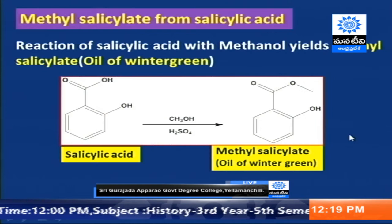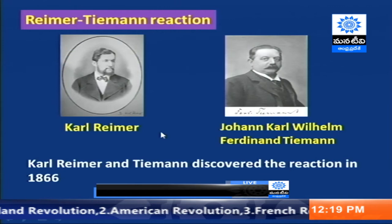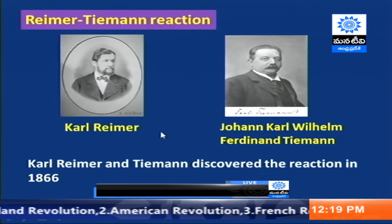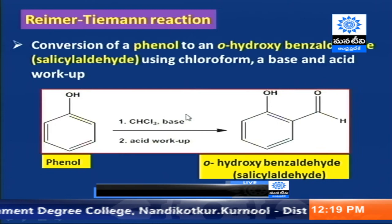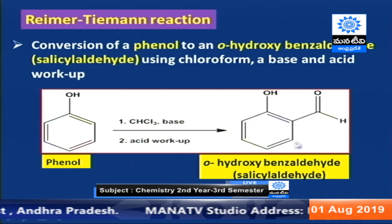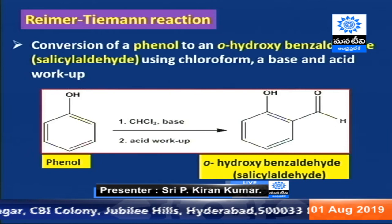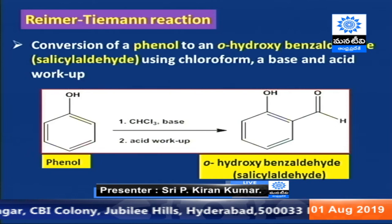The next reaction is the Reimer-Tiemann reaction, discovered in 1866 by Reimer and Tiemann. In this reaction, we convert phenol into orthohydroxybenzaldehyde, also known as salicylaldehyde. When phenol is treated with chloroform in the presence of a base, we obtain salicylaldehyde.